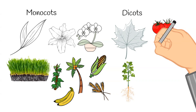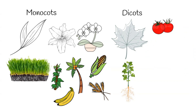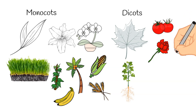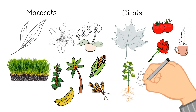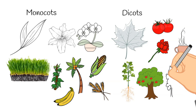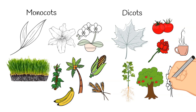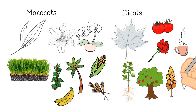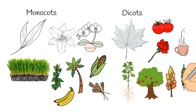Some examples of dicot plants include tomatoes, roses, coffee, apple trees, maple trees, and even peas. These are also important plants, and you can see how they all serve different purposes.